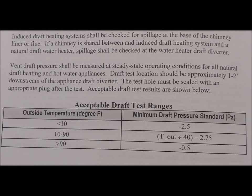Acceptable draft test results: Outside temperature less than 10°F: negative 2.5. Between 10°F and 90°F: delta T out divided by 40, minus 2.75. More than 90°F: negative 0.05.